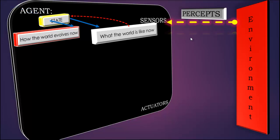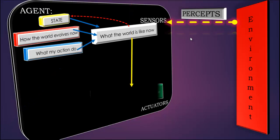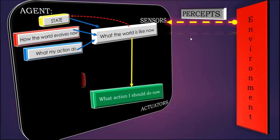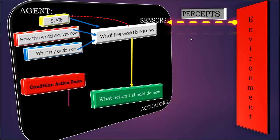It will check how the world evolves now and what my action will do—that is, how its action will affect the agent's performance. Based upon its previous history in which it achieved the best performance, the decision will be given to its actuators about what actions it should do now.